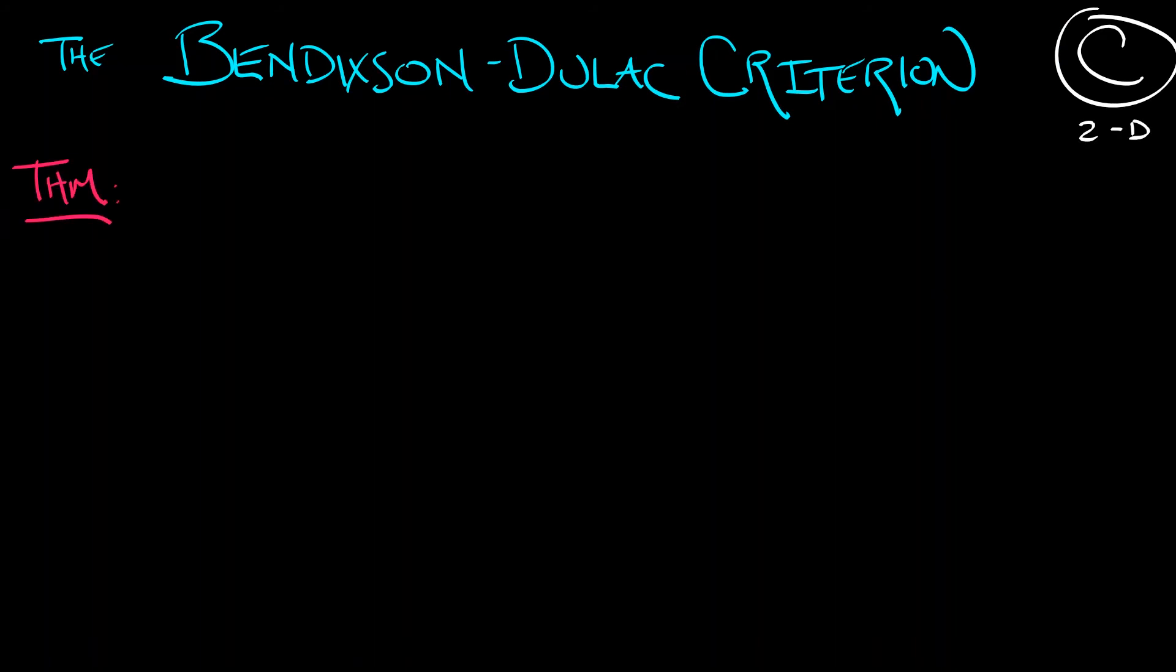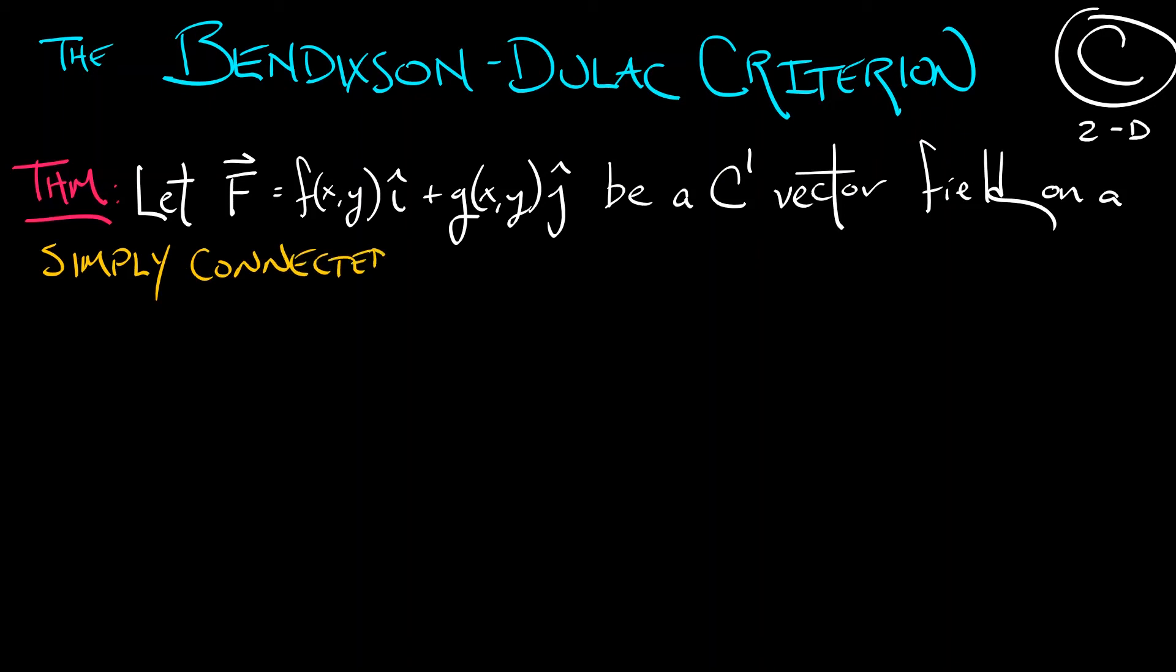Let's say that you have a vector field f of the form fi plus gj, where f and g are functions of x and y. This needs to be a continuously differentiable vector field on a simply connected domain in the plane.